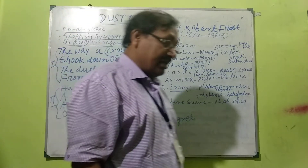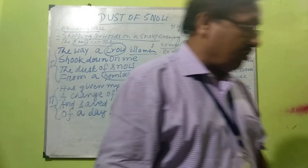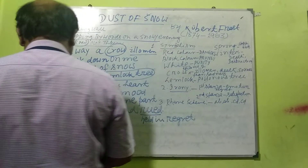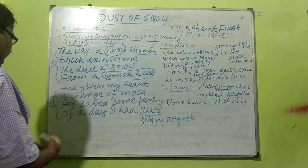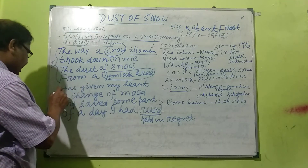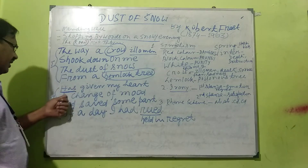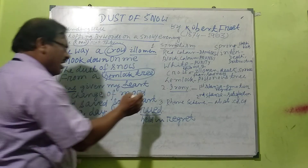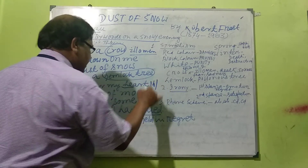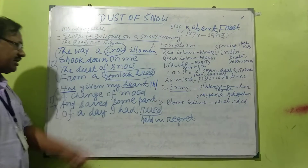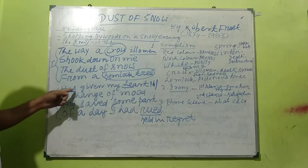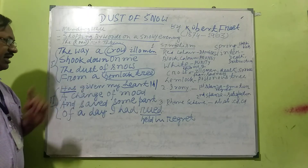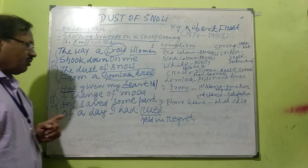Alliteration is also used in this poem. In the line 'Has given my heart a change of mood,' the H sound is repeated — 'has,' 'heart.' The H sound is represented in the text. So alliteration is used in the first line of the second stanza.